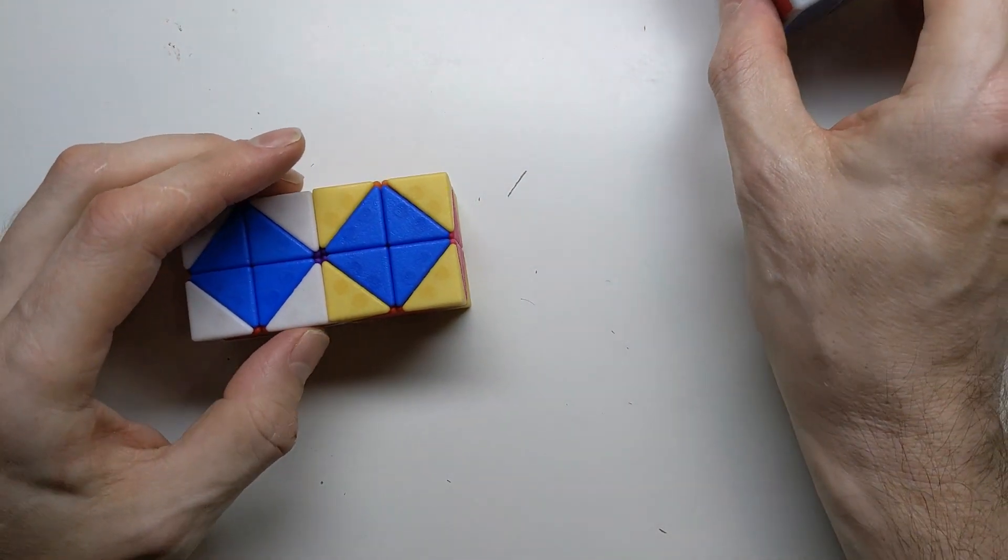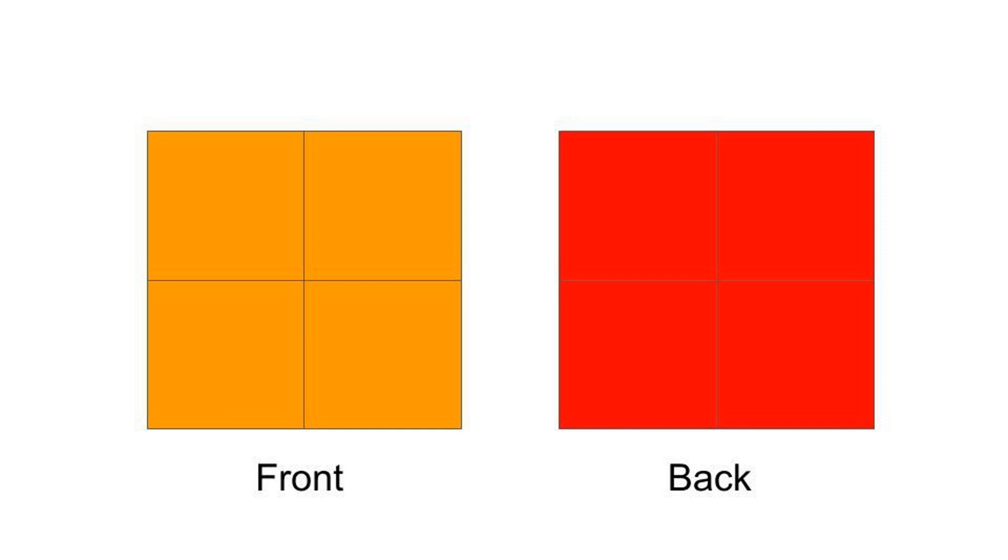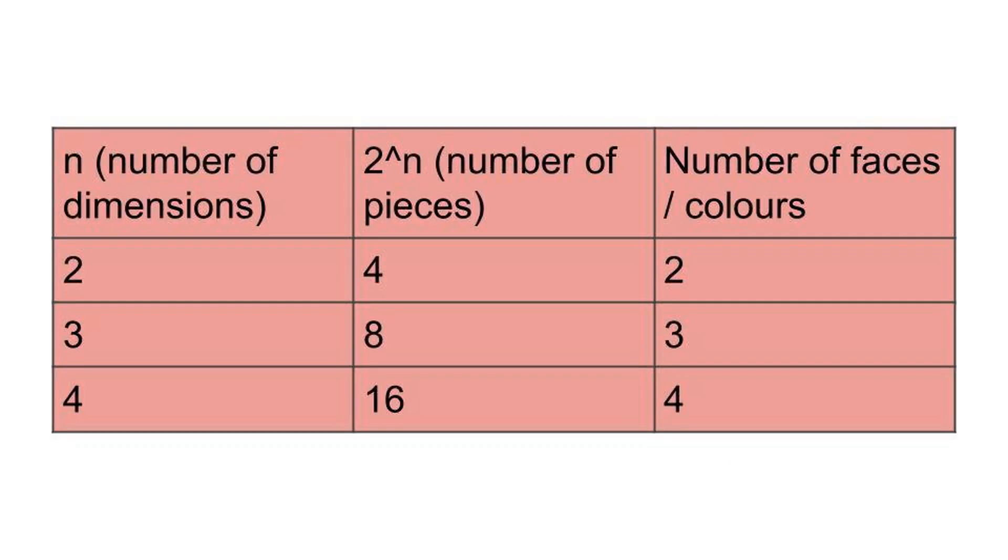If we made a two-dimensional puzzle like this, it would be a two-by-two consisting of four squares, each of which would have two colors, one on each side. So there's a progression here. If we have an n-dimensional puzzle, the puzzle is made up of 2^n pieces, each of which has n faces on it, and thus n colors.